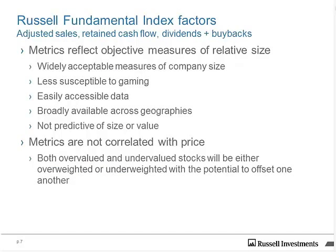In the Russell Fundamental Series, instead of using price as the weighting variable, we use three metrics: adjusted sales, retained cash flow, and dividends plus buybacks. These are objective measures of relative size, not subject to the whims of the marketplace or consensus views of investors trying to predict future value. They are widely accepted forms of company size, generally more difficult to game from an accounting standpoint, and importantly, they are generally available across markets — we can get information on sales, cash flow, and dividends for emerging markets just as for developed markets. Critically, these metrics are not correlated with price, so they tend to be more stable during market bubbles or crashes.